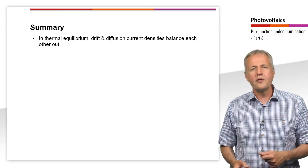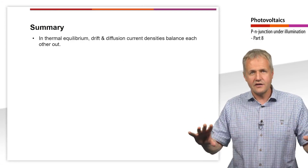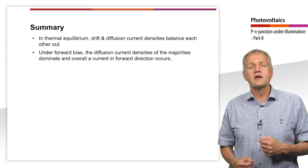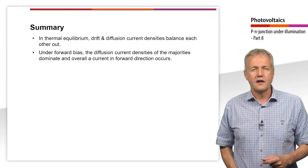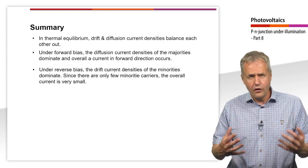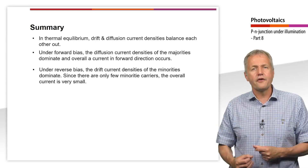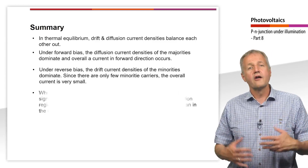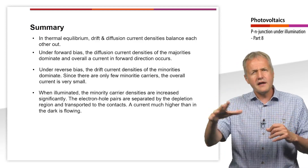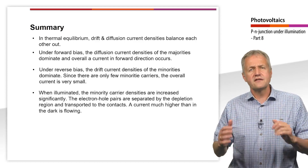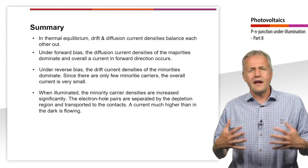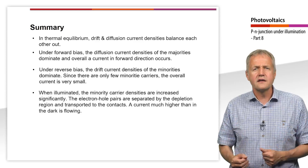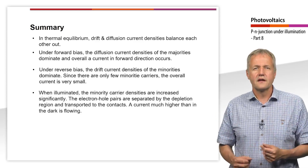In summary: in thermal equilibrium, drift and diffusion current densities balance each other out. If we put the p-n junction under forward bias, the diffusion current densities of the minorities dominate and overall a current in forward direction occurs. Under reverse bias, the drift current densities of the minorities dominate. Since there are only a few minority carriers, the overall current is very small — this is called the reverse saturation current. Finally, if we illuminate the p-n junction, many electron-hole pairs are created and the minority densities increase significantly. The electron-hole pairs are separated by the depletion region and transported accordingly. A current much higher than in the dark flows — the photocurrent. Thank you for your attention.